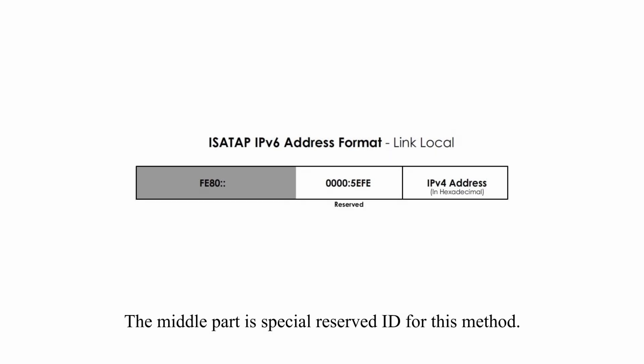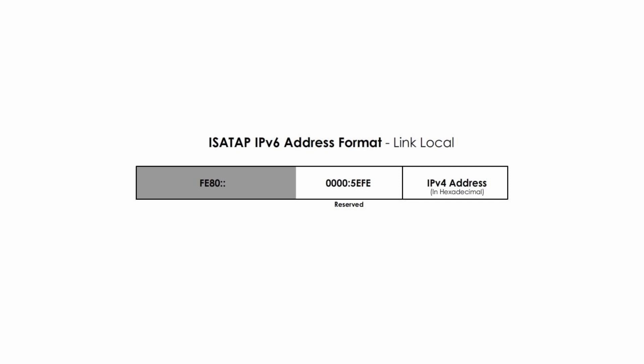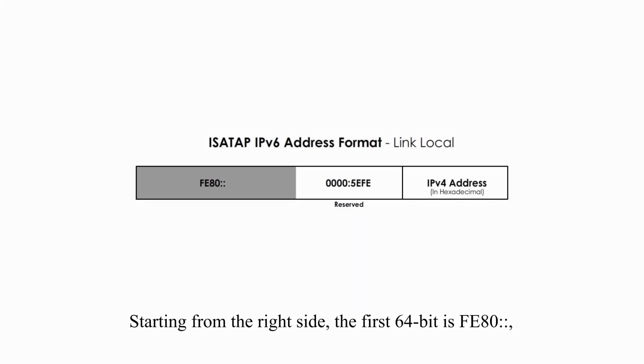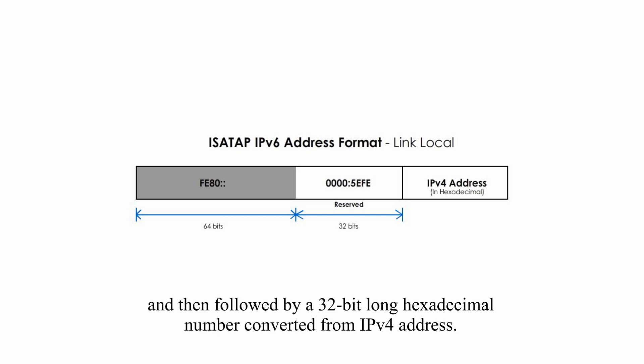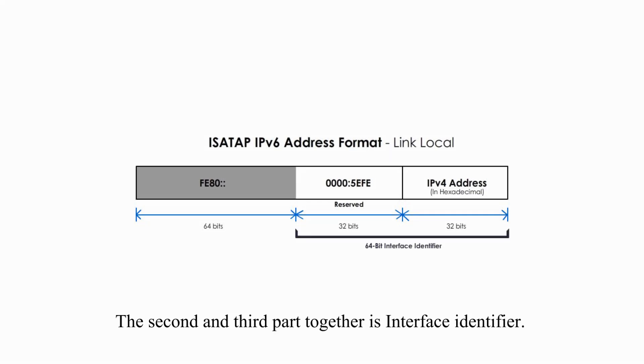The middle part is a special reserved ID for this method. Starting from the right side, the first 64-bit is FE80, followed by the special reserved ID, and then followed by a 32-bit long hexadecimal number converted from the IPv4 address. The second and third parts together form the interface identifier.